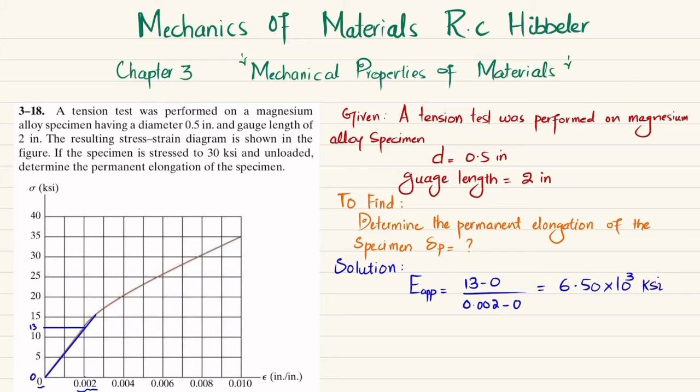Now we have found this. You can see it is given that for 30 ksi load, the specimen is loaded to 30 ksi. At this load, the strain will be 0.0078.